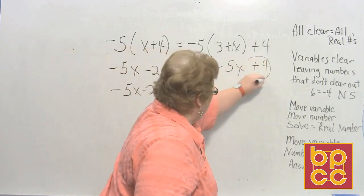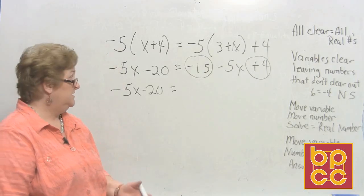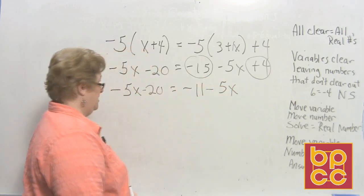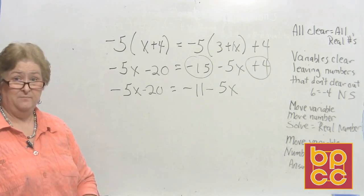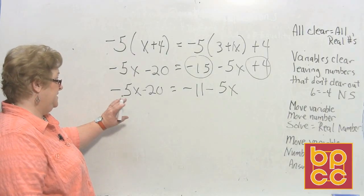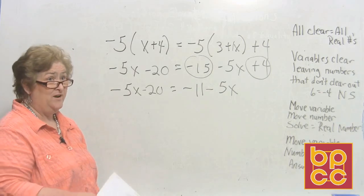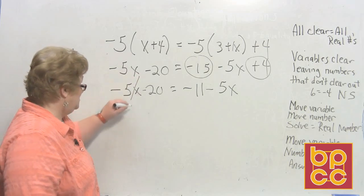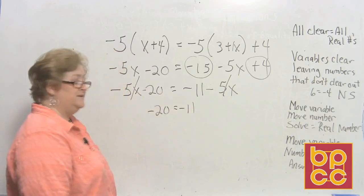On the right side we need to combine −15 and positive 4. The difference is 11, so that's −11. We get −5x − 20 = −11 − 5x. Now we've distributed and combined like terms, so it's time to move things. Starting with x's: we have −5x on both sides of the equal sign — they're going to clear out.